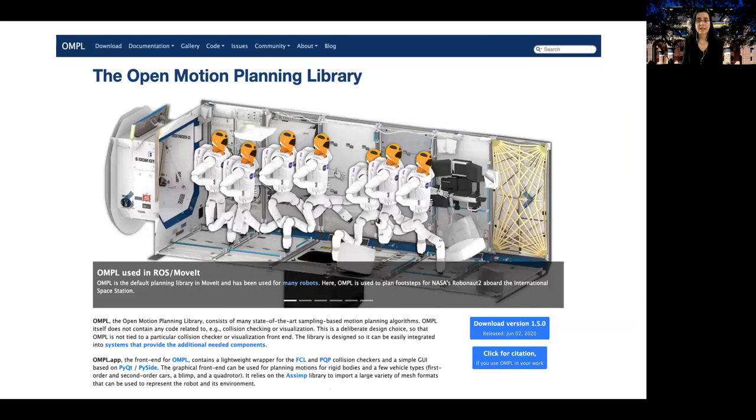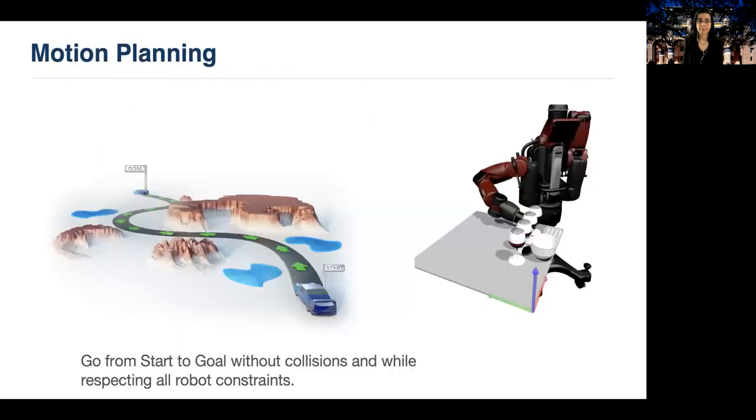Over the last 15 years, my laboratory has spearheaded and provided significant financial support for the development of OMPL. OMPL stands for Open Motion Planning Library. OMPL is a collection of sampling-based motion planning algorithms. In order for me to explain what OMPL is, allow me a few introductory slides.